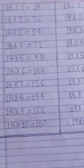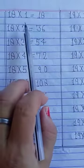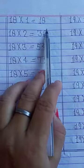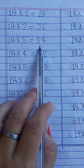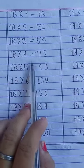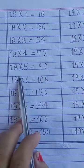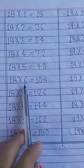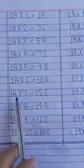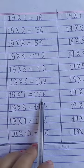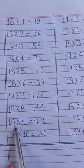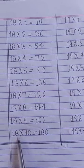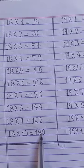Now after table of 17, table of 18. 18 ones are 18. 18 twos are 36. 18 threes are 54. 18 fours are 72. 18 fives are 90. 18 sixes are 108. 18 sevens are 126. 18 eights are 144. 18 nines are 162. 18 tens are 180.